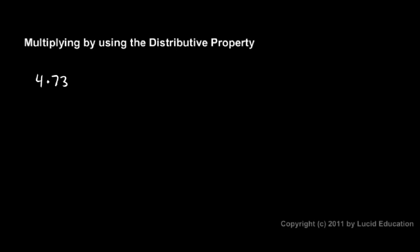Suppose you're asked to multiply 4 times 73, and you don't have a calculator handy, and you probably haven't memorized your multiplication table out to 73. Sometimes we can use the distributive property to multiply large numbers pretty quickly and easily without a calculator.